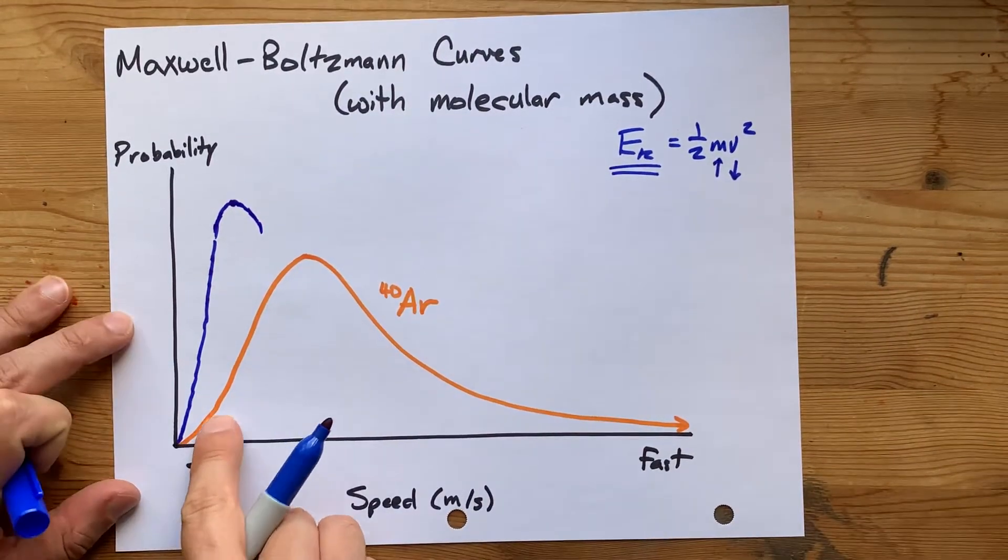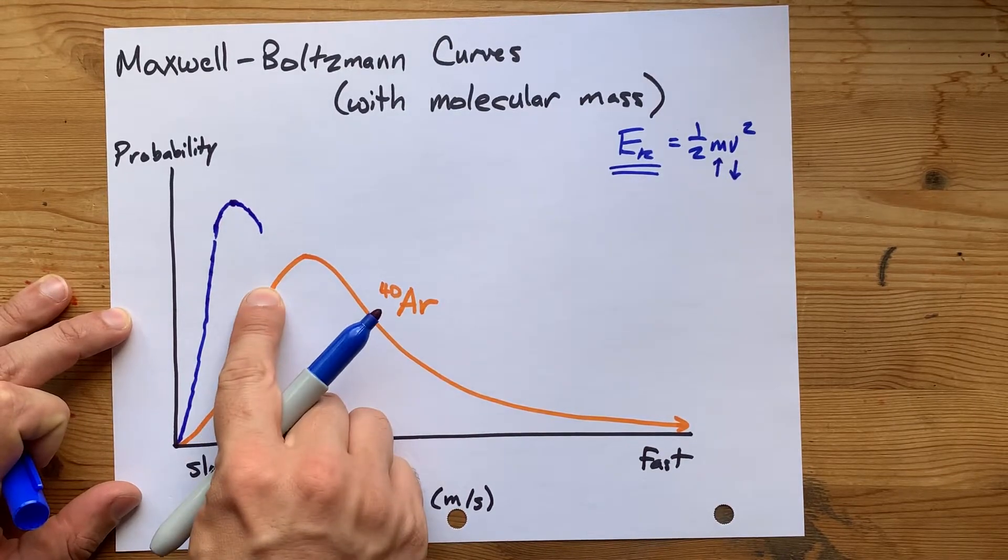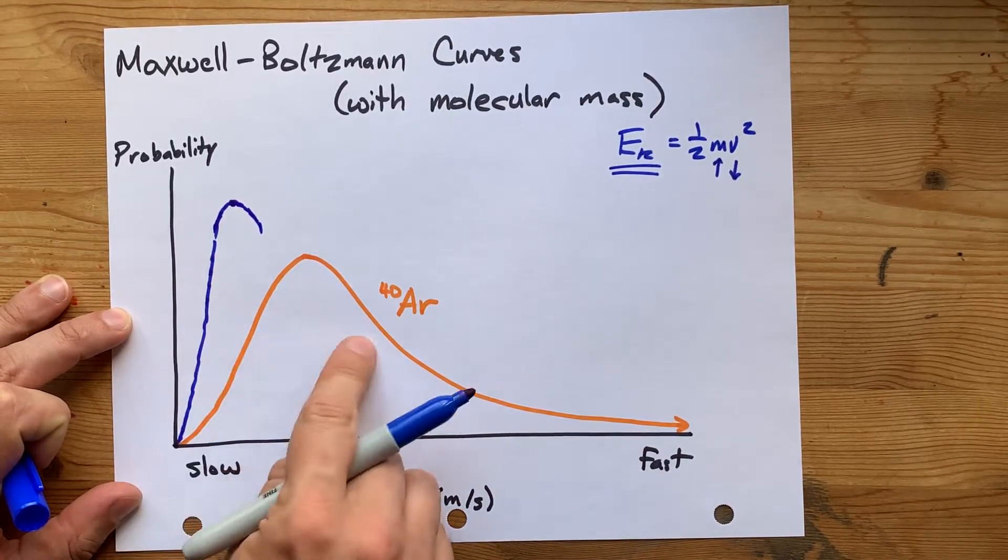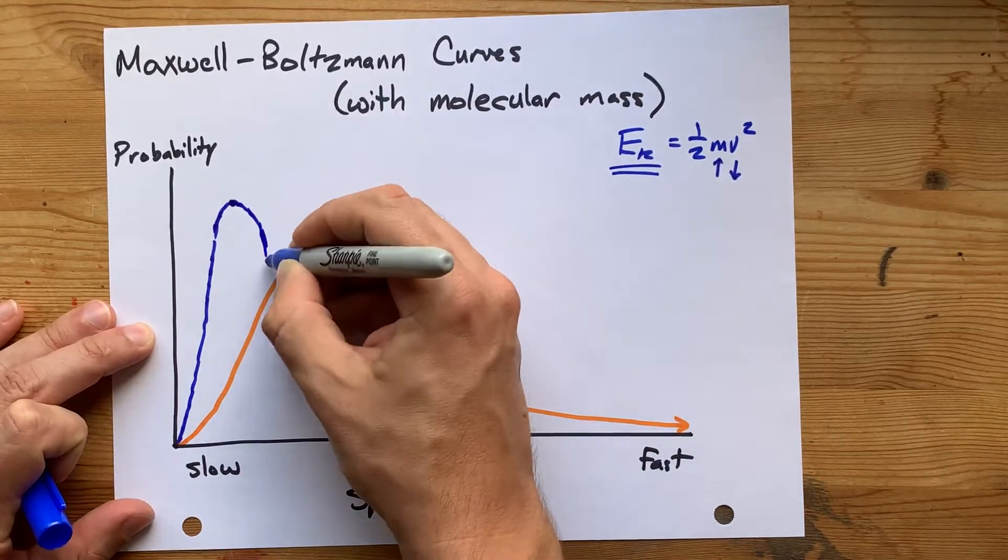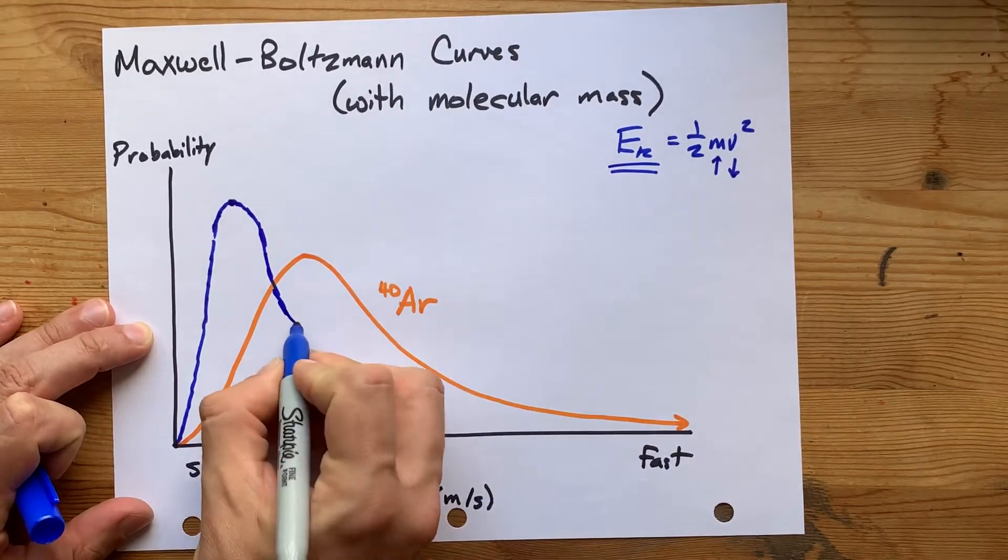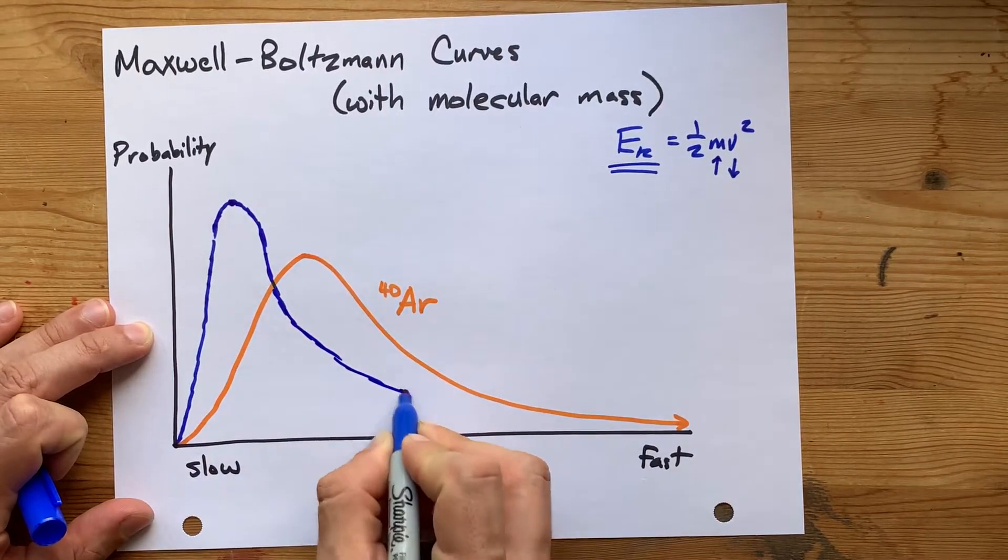Now, you've been above the orange curve the whole time, or the lighter particles curve. So I need you to drop back down below it, and then start to approach your x-axis.